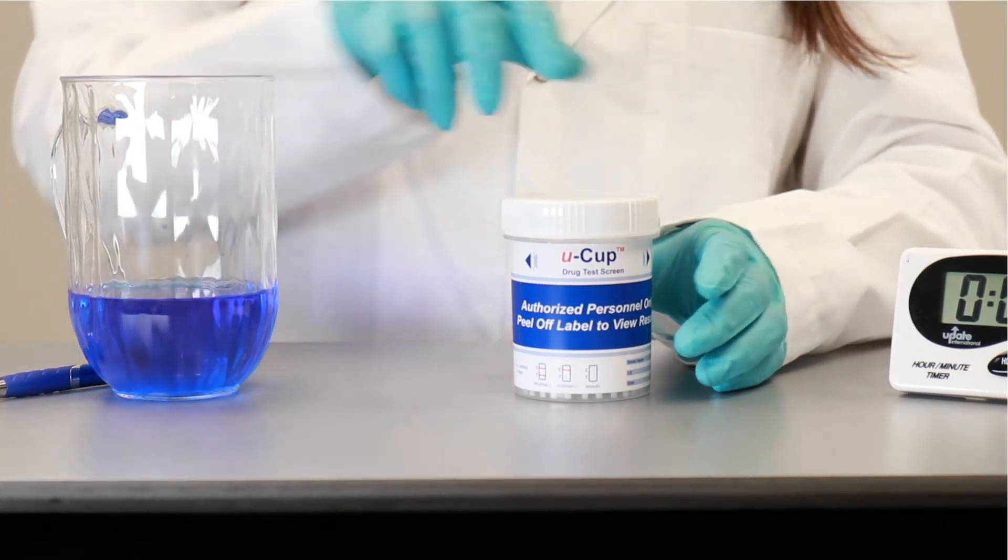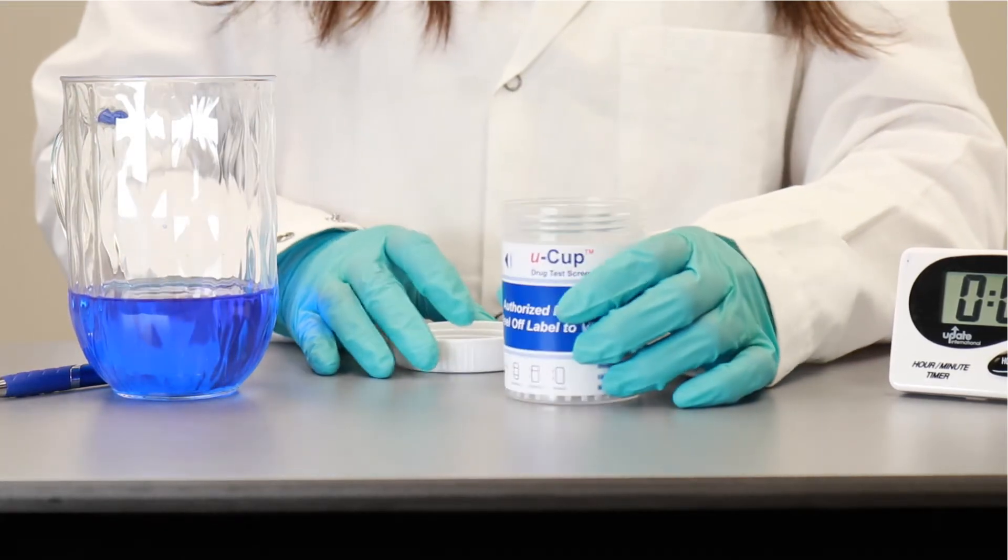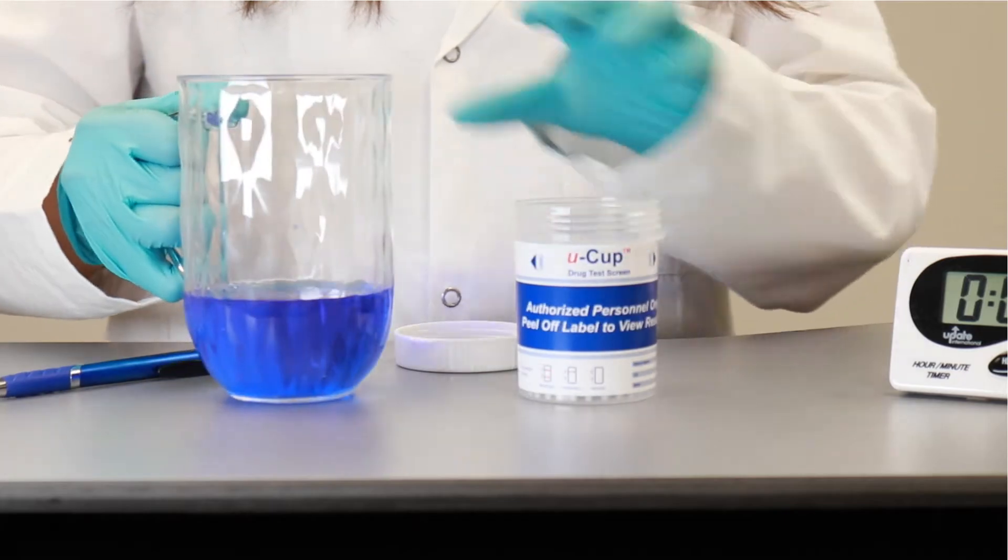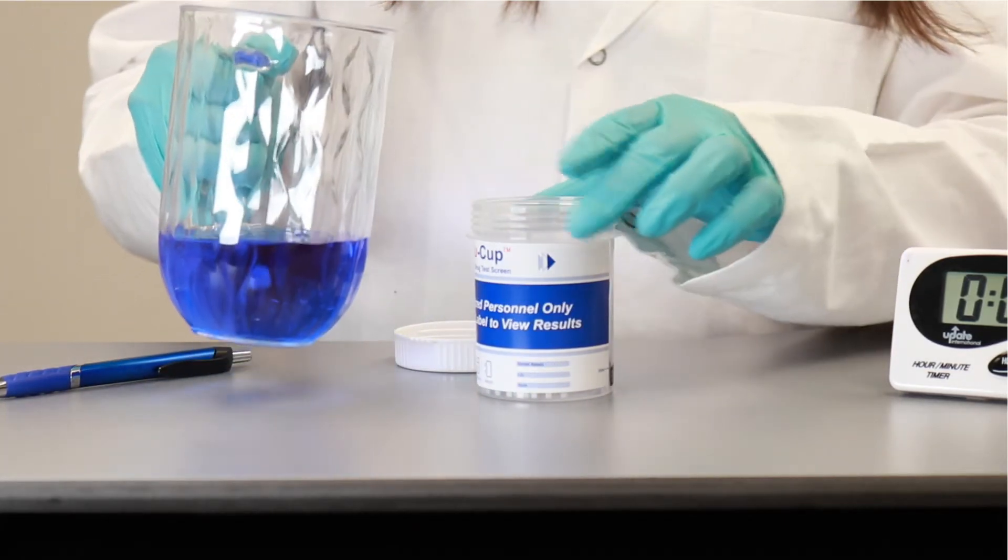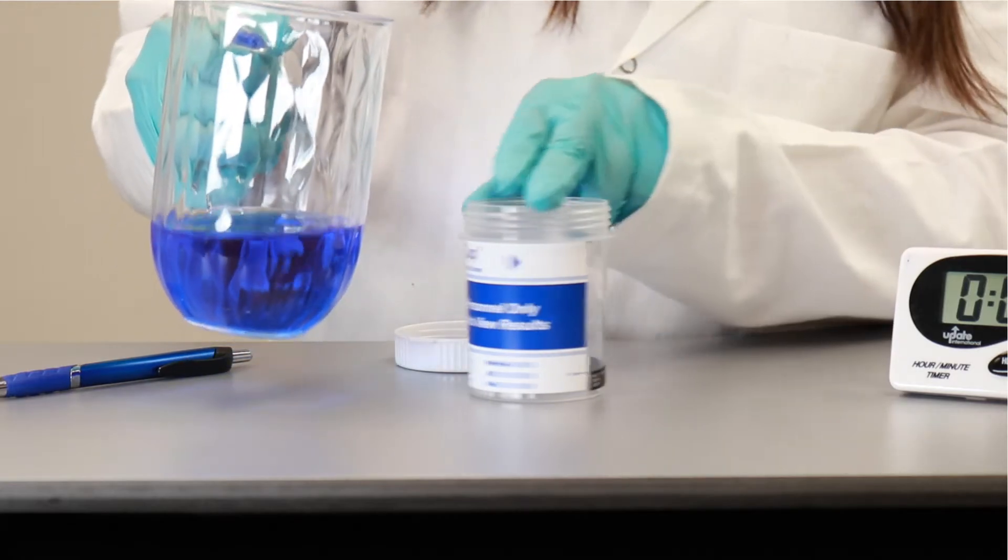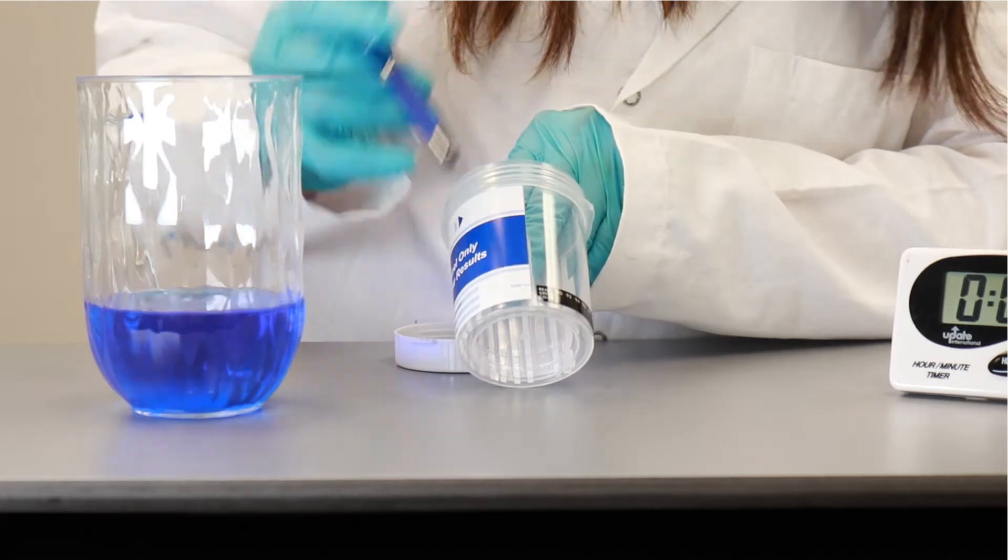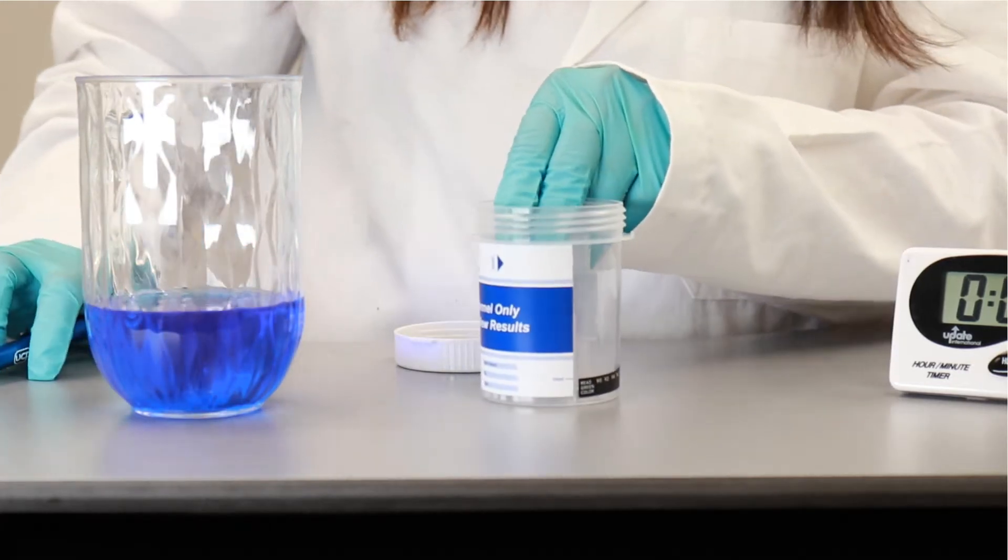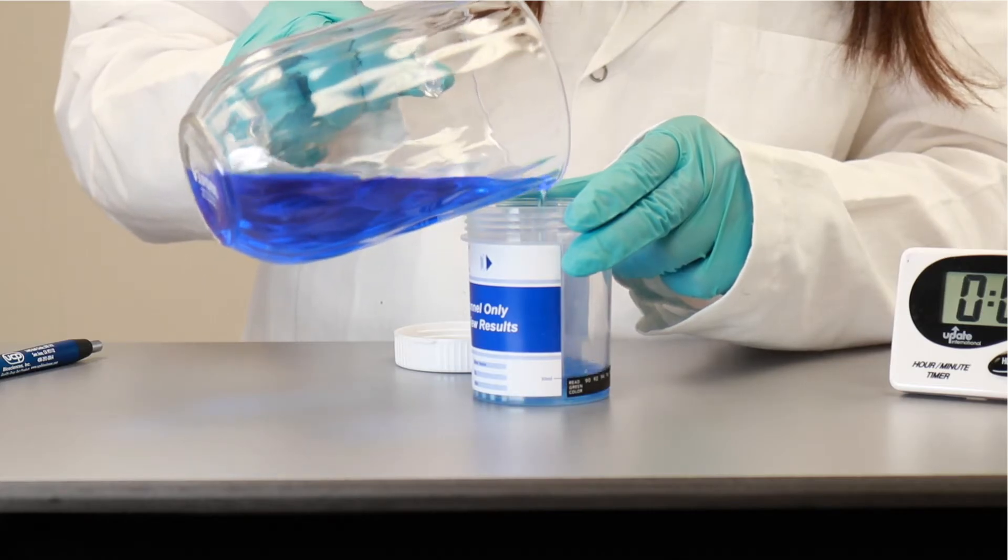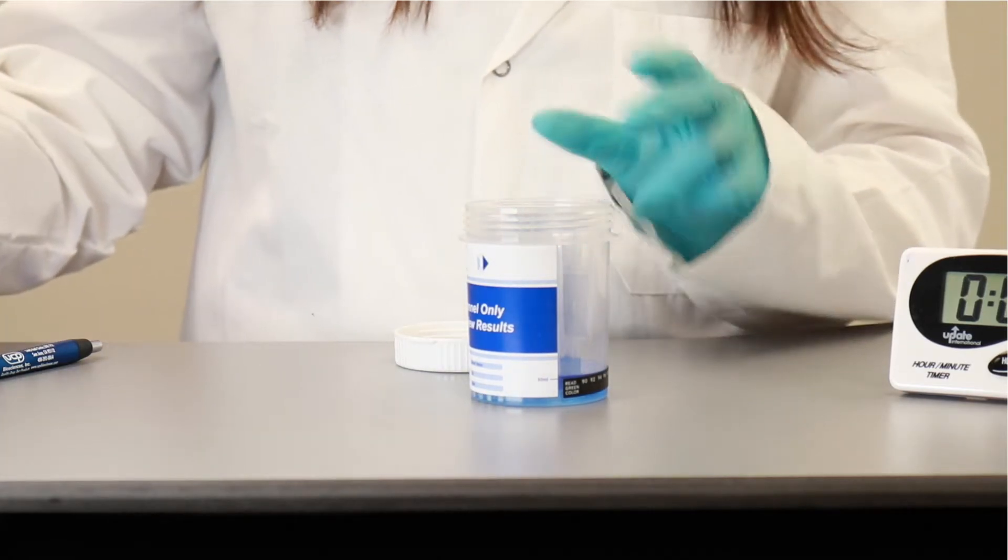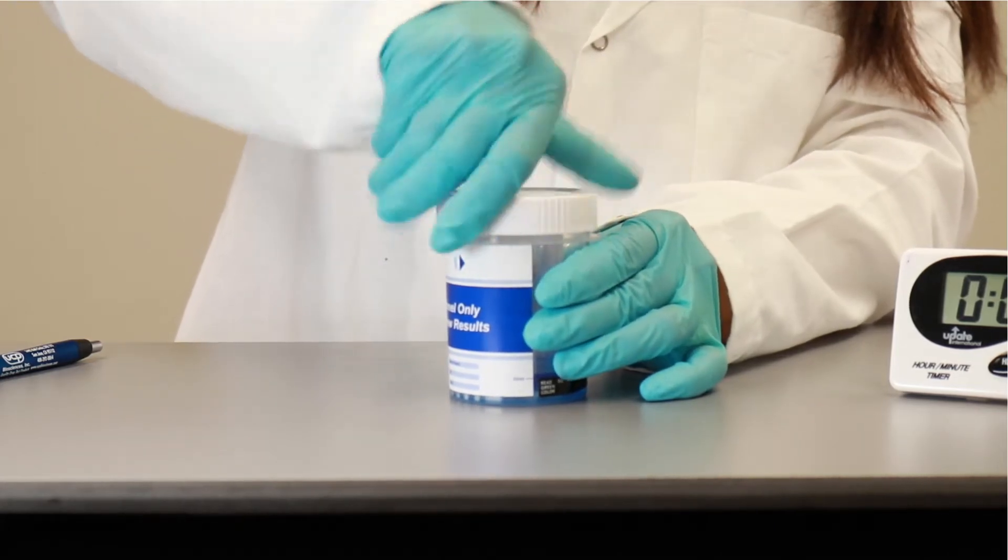So what we are going to do now, we are going to open the lid. This is the sample that I have prepared. It's a colored water sample, just for the instructions. We are going to add this sample to the 30 milliliter mark. So if you can see right here, there is a 30 milliliter mark. I am going to add just enough sample in here, and close the lid all the way, seal it.